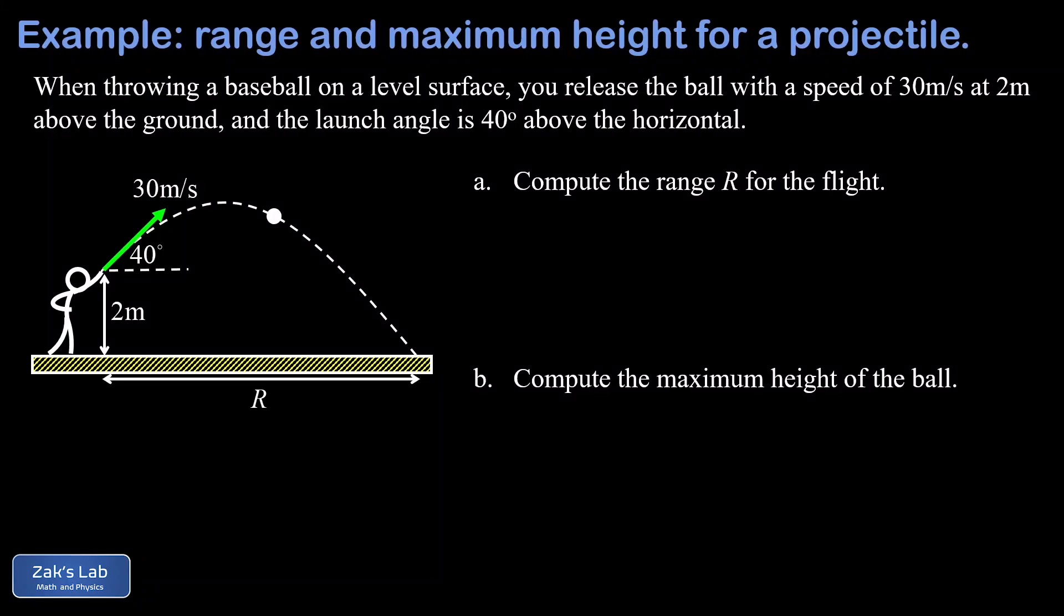In this video we're looking at a projectile motion problem where we have a person throwing a baseball. They release the baseball from two meters above the ground at an angle of 40 degrees with respect to the horizontal, and the initial speed is 30 meters per second. What we're trying to find in the problem is the range, in other words the total horizontal distance traveled by the ball during the flight, and then we're going to find the maximum height of the ball.